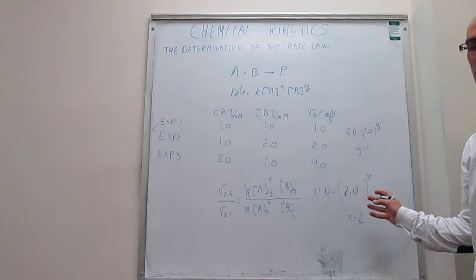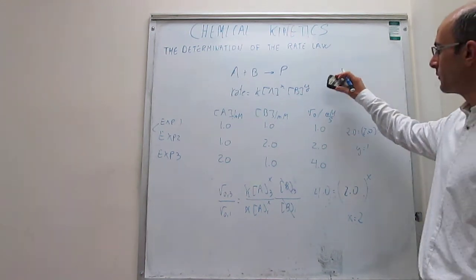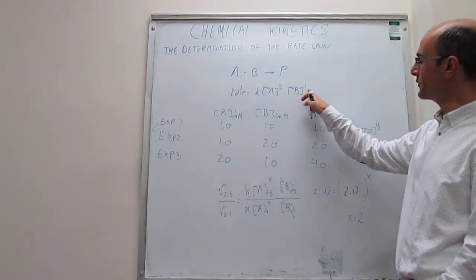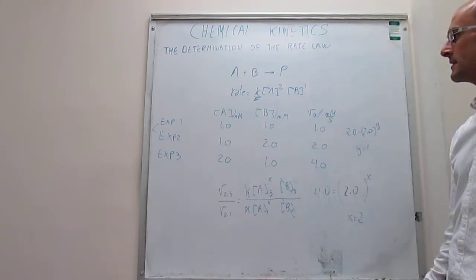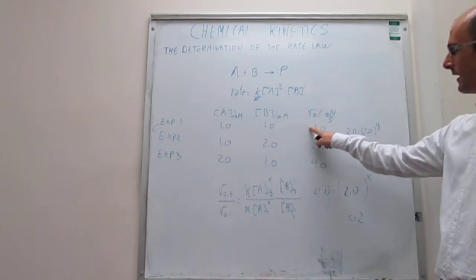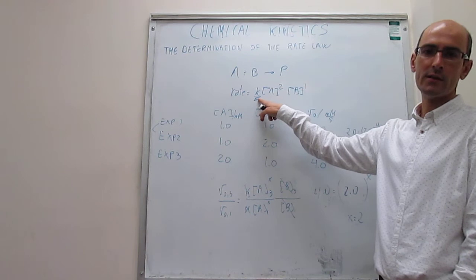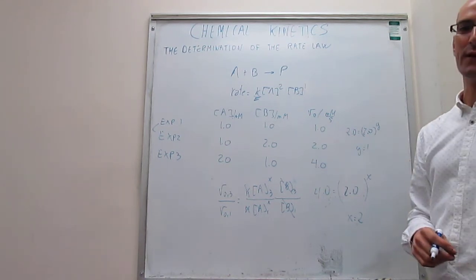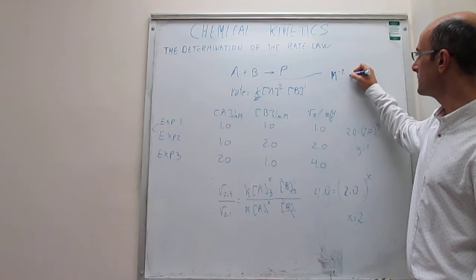We have already determined the reaction orders with respect to A and B. X = 2 (second order with respect to A), Y = 1 (first order with respect to B), making it third order overall. The last thing to determine is the rate constant. To find k, you replace everything in any one of the experiments — take experiment 1, plug in the rate, plug in [A] squared, plug in [B], and solve for k. You can also determine the units: since this is an overall third order reaction, the units of k are molar⁻² per second.